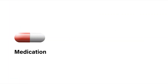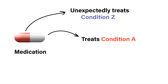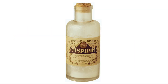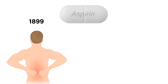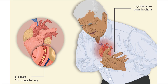This is a scenario where a medication designed for one use also has an unexpected secondary use. For example, aspirin was initially used as a mild pain reliever when introduced in 1899. It wasn't until 1950 that it was discovered to reduce clotting in the blood, which proved advantageous during heart attacks to increase chances of survival by preventing blood clots.